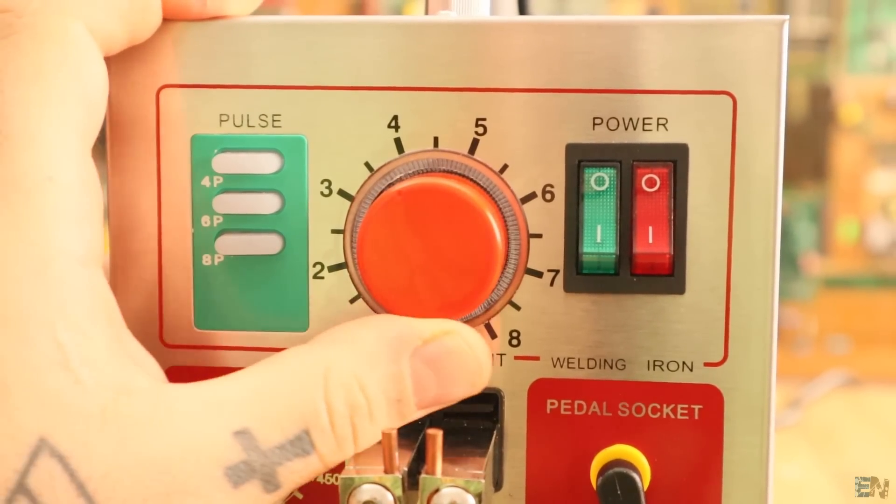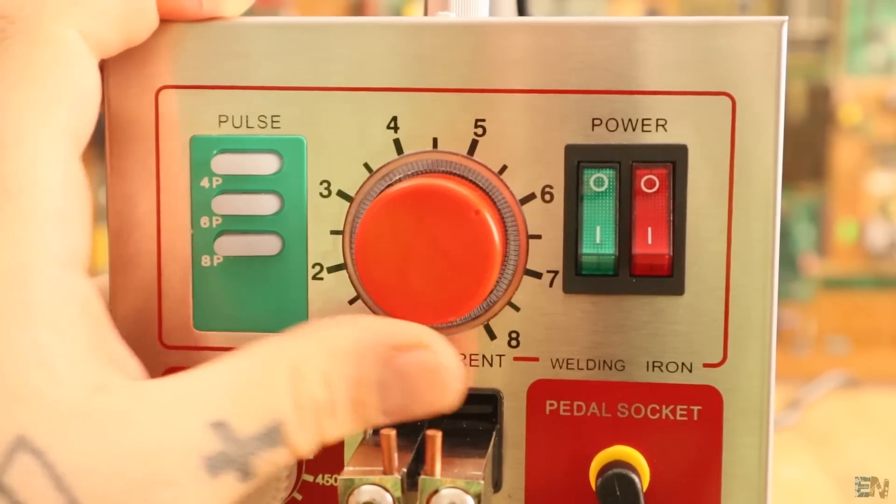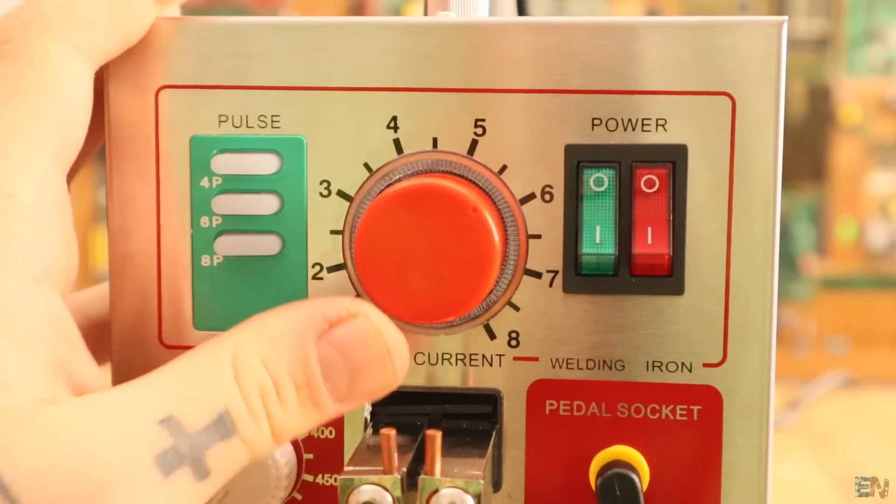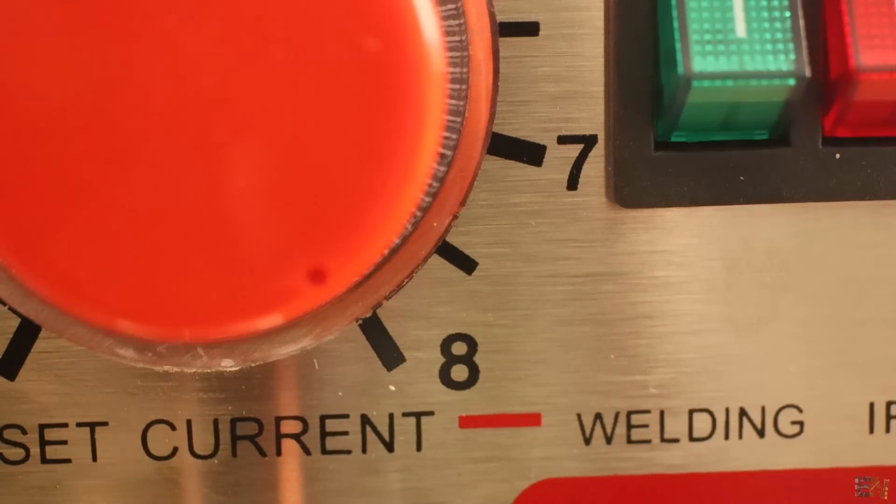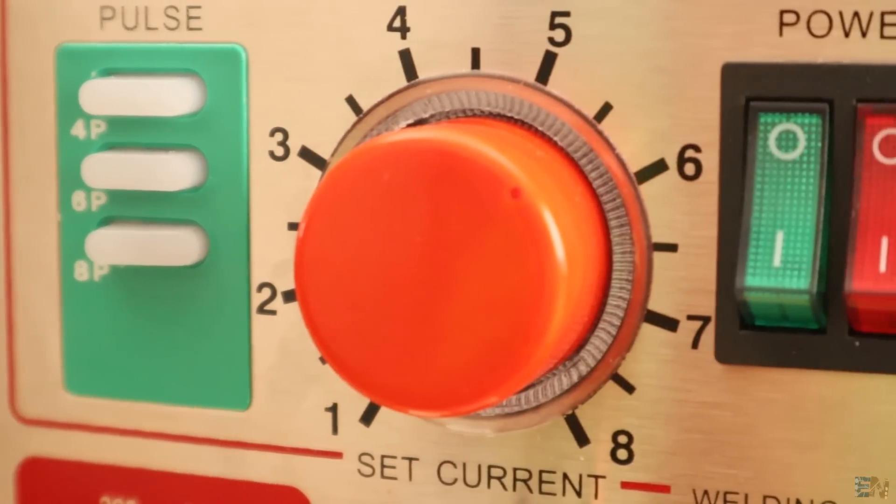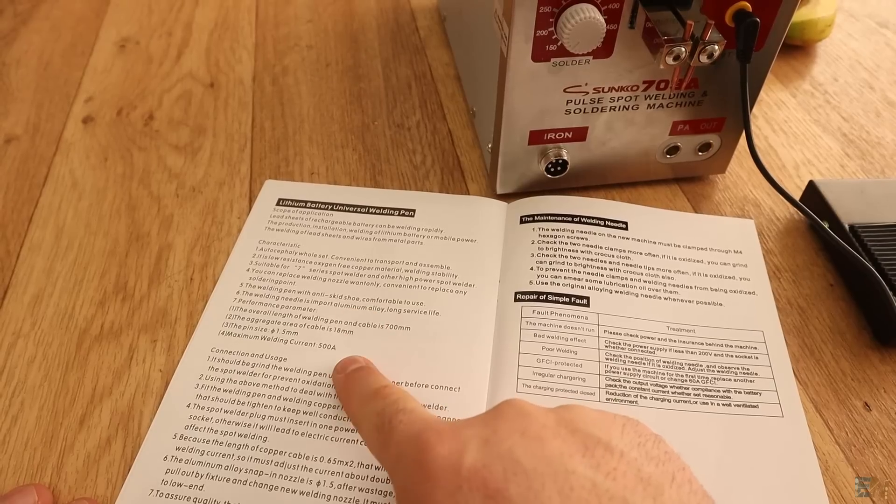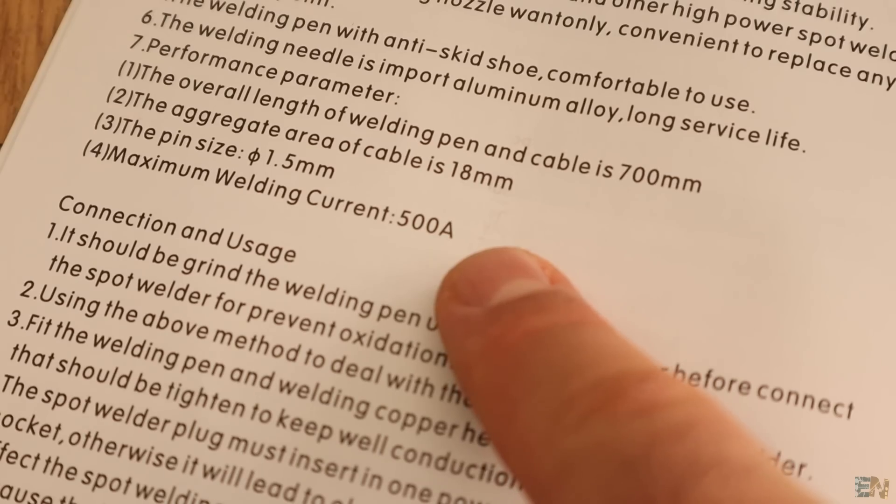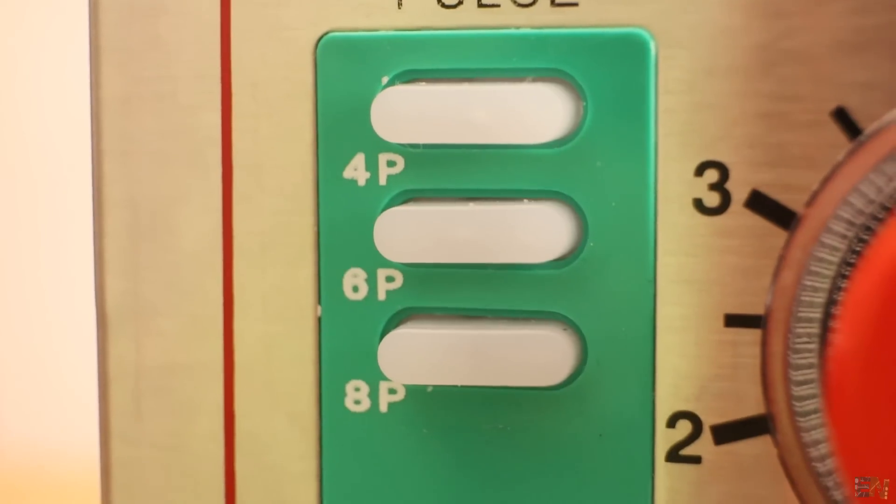On the top part, we have the power knob in order to select the amount of current that will be applied. Now this goes from 1 to 8, but these are not amperes, this is just a level indicator. The station could deliver up to 500 amperes DC. So on the left, we have 3 push buttons.